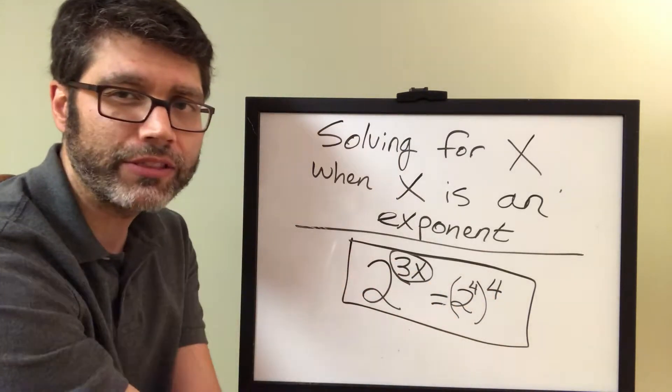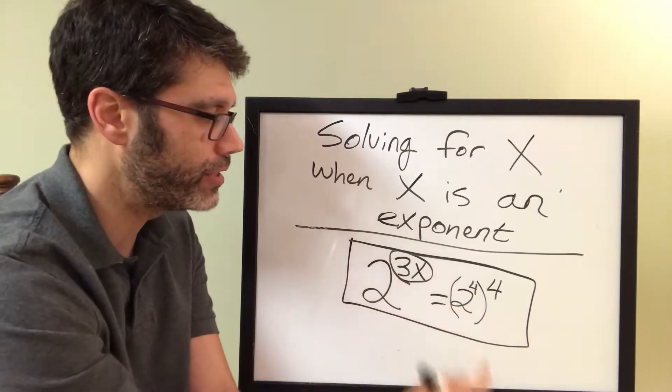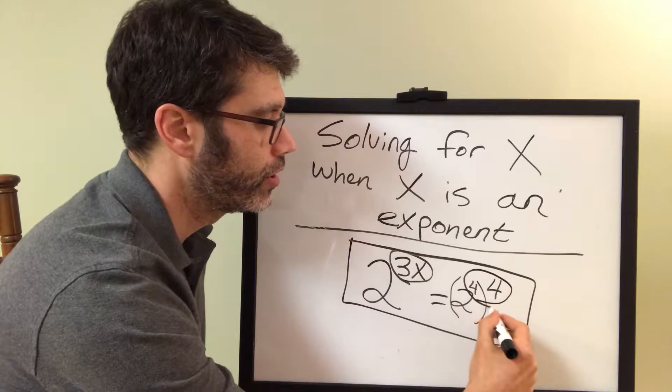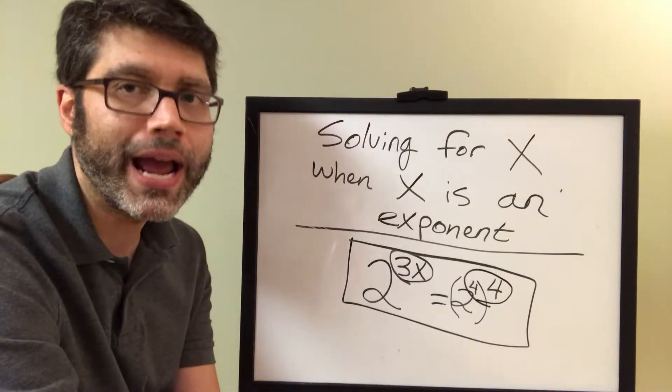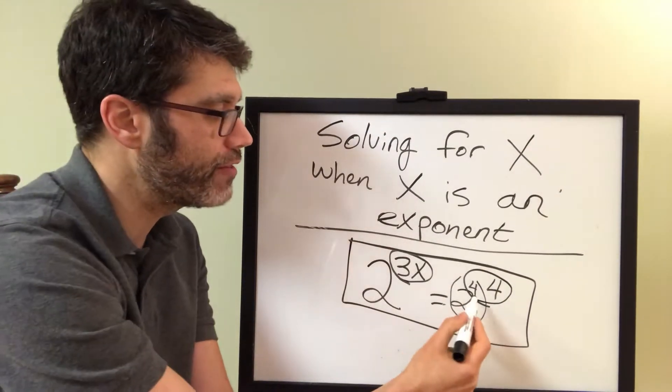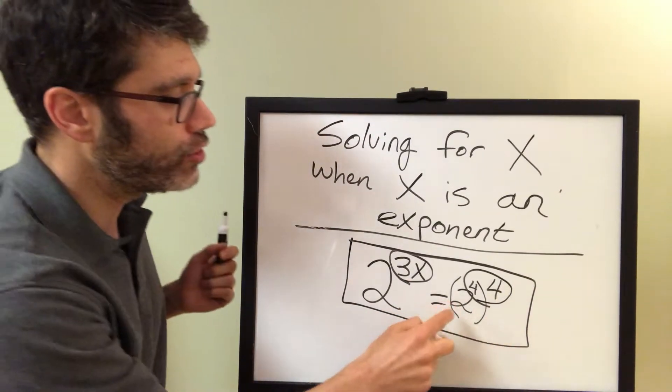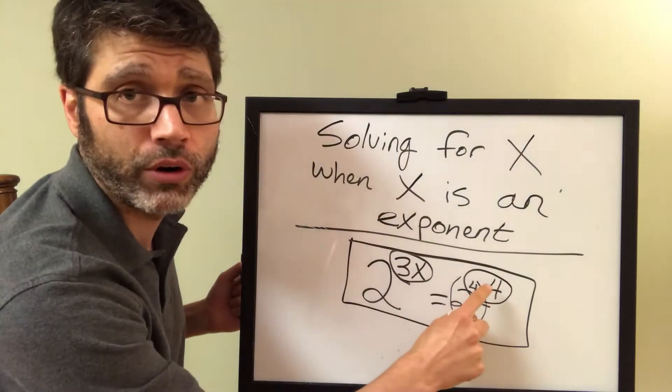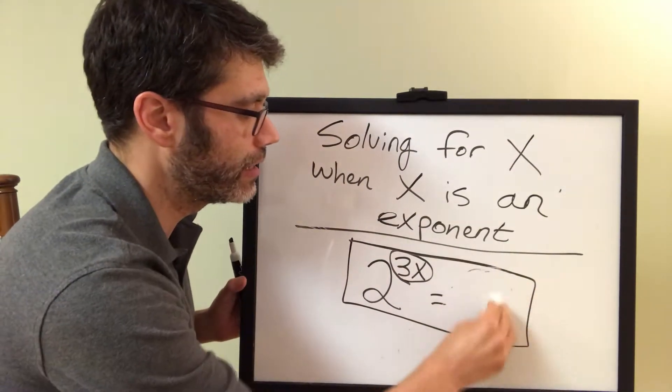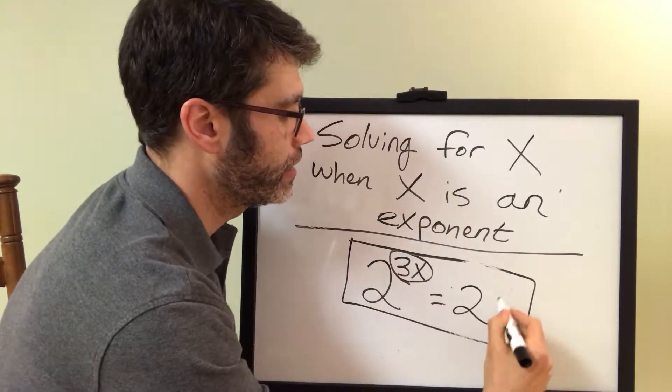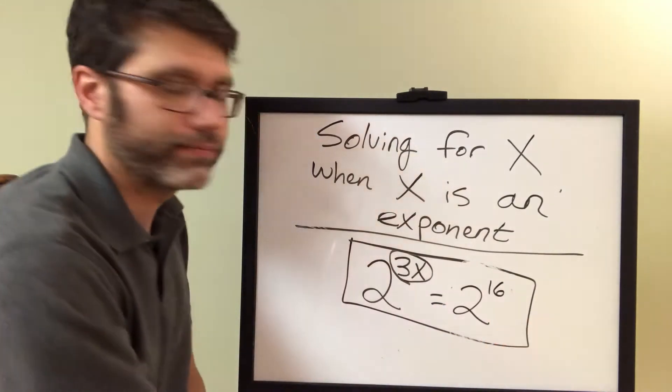One last step before we set the exponents equal to each other, you see that we have a power raised to another power, power of powers. What do we do when we have a power raised to another power? We multiply. So that would be 2 to the 4 times 4. 4 times 4 is 16. So that's 2 to the 16th.